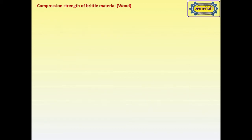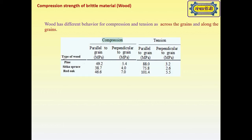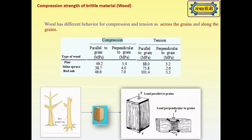Compression strength of brittle material wood: Wood has different behavior for compression and tension across the grains and along the grains. For wood, the load carrying capacity parallel to the grain flow is much higher than perpendicular to the grain flow. Hence, accordingly, the wood piece is selected for making wood structures.